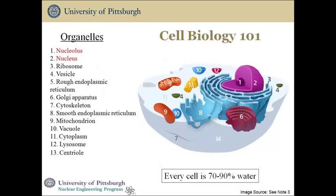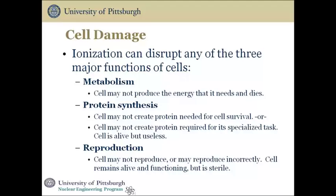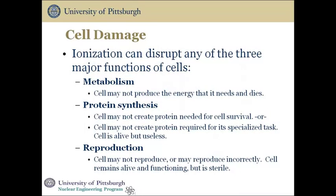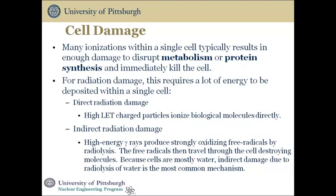Ionizing radiation can disrupt the three major functions of cells: metabolism, protein synthesis, and reproduction. Because of ionization, cells may not produce the energy they need and the cell dies. Cells may not create the protein needed for cell survival, or cannot create protein required for their specialized task — the cell is alive but useless. Cells may not reproduce, or may reproduce incorrectly — the cell remains alive and functioning but sterile. Many ionizations within a cell can disrupt metabolism or protein synthesis and kill the cell, but it requires a lot of energy to be deposited within the cell.